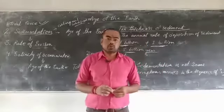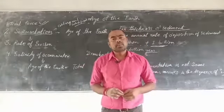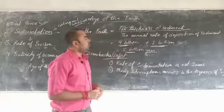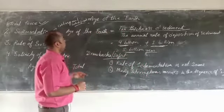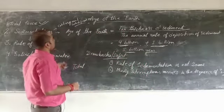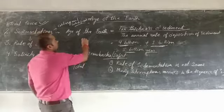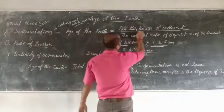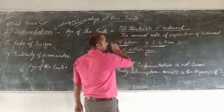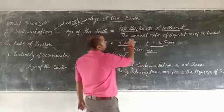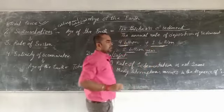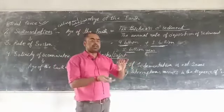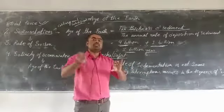With this sedimentation, how can we calculate the age of the earth? The formula given is: age of the earth equals the thickness of the sediment divided by the annual rate of deposition of the sediment. That means we take the thickness of the sediment and divide by how much is deposited per year.